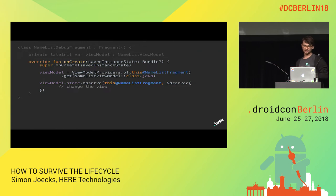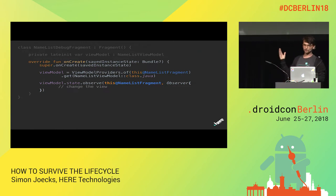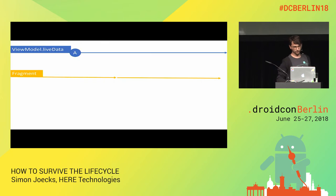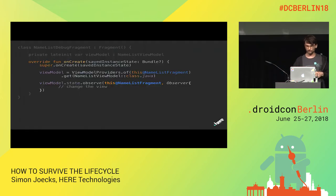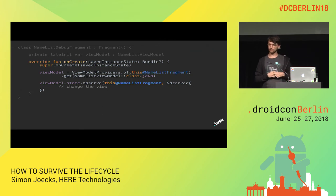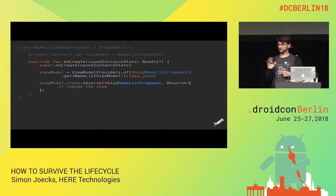This helped us to do simple setups like this. In onCreate on the fragment, you could get the ViewModel and then observe the changes on the ViewModel with the fragment's lifecycle, and then get the object delivered.